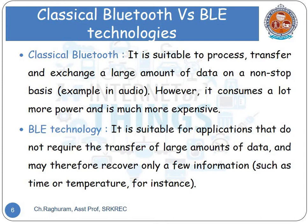Classification of Bluetooth versus BLE. There is also classical Bluetooth. Both technologies have very different purposes. Conventional Bluetooth is suitable to process, transfer, and exchange large amounts of data on a continuous basis; however, it consumes a lot more power and is more expensive. BLE, on the other hand, is suitable for applications that do not require transfer of large amounts of data, recovering only small pieces of information such as time or temperature. As a result, the device may run on a battery for several years at lower cost, as it does not require continuous connections.